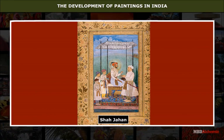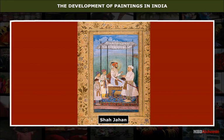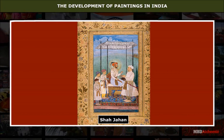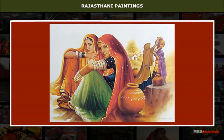The Mughal style of painting declined after Shah Jahan's reign. Thereafter, artists moved to provincial capitals where the art of painting continued to flourish in the form of a variety of schools, such as the Deccan school, the Rajput school, and the Kangra or Pahari school.